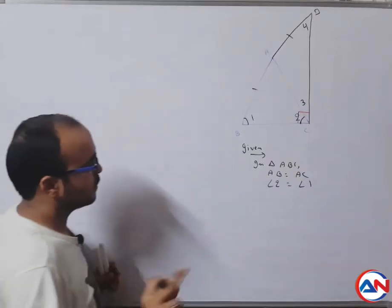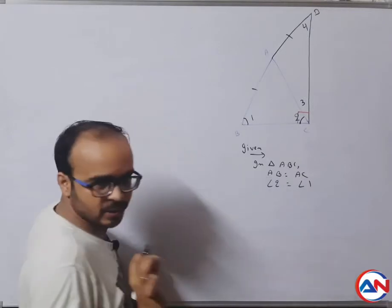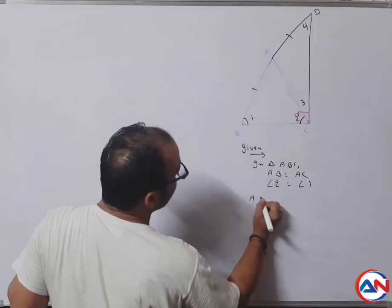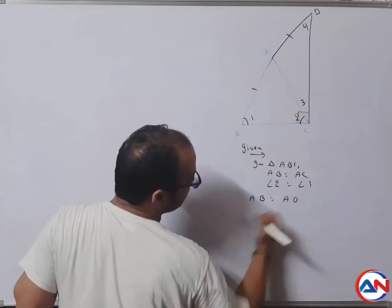Angle two equals to angle one. Now, you have to give AB is equal to AD.